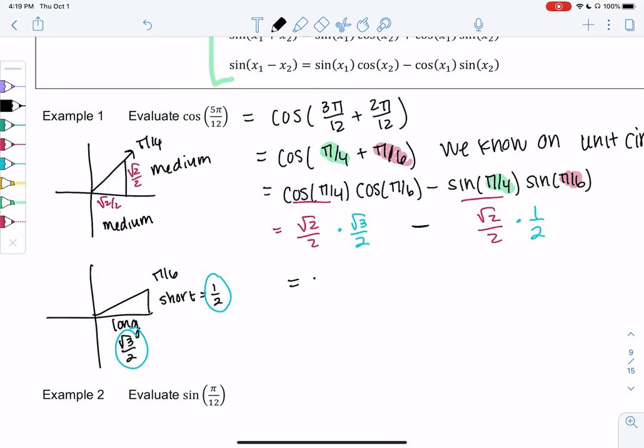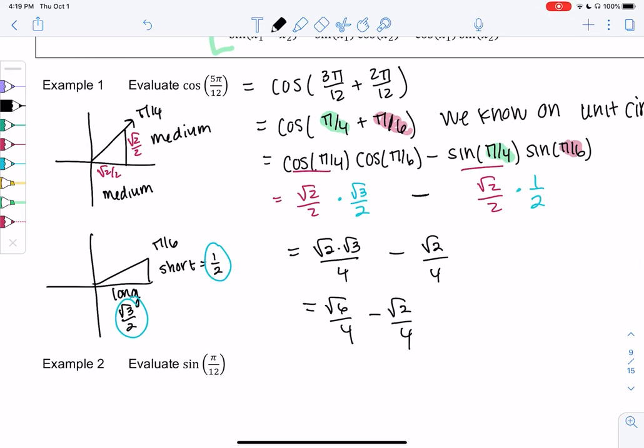So I'm going to simplify this. Root 2 times root 3 over 4, which is root 6 over 4. And then we get root 2 over 4 minus root 2 over 4. And you can't subtract square roots, so like that's not root 6 minus 2. It doesn't work like that. So we'll just keep them separate, and that's our final answer.